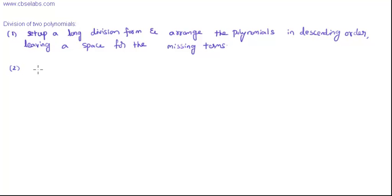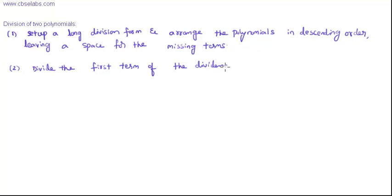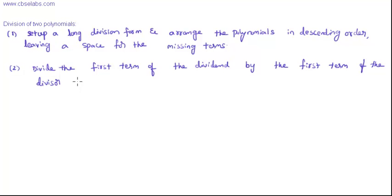The second step is: divide the first term of the dividend by the first term of the divisor, and write the quotient.